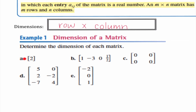For A, we have a single number — one row and one column — so it's a 1 by 1 matrix. For B, we have one row and four columns, so it's a 1 by 4. For C, two rows and two columns — a 2 by 2. D has three rows and two columns — a 3 by 2. And E has three rows and one column, so it's a 3 by 1. That's all it means: how many rows, how many columns.